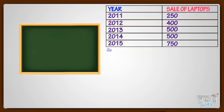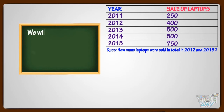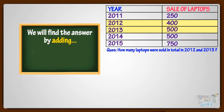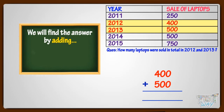How many laptops were sold in total in 2012 and 2013? We are asked to find the laptops sold in total in 2012 and 2013. From the table we see 400 laptops were sold in 2012 and 500 were sold in 2013. So, 900 laptops were sold in total in 2012 and 2013.